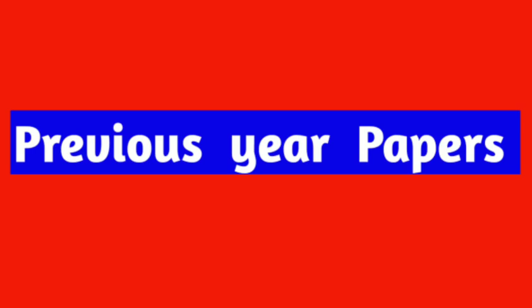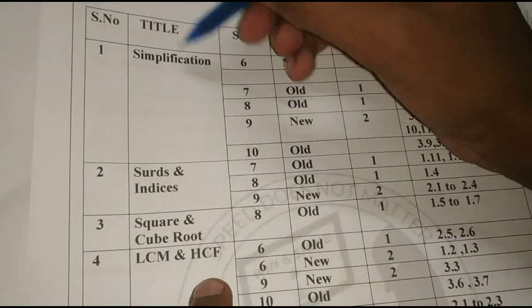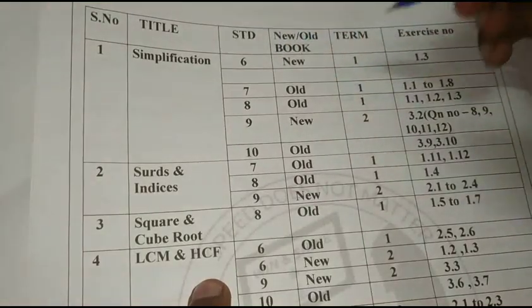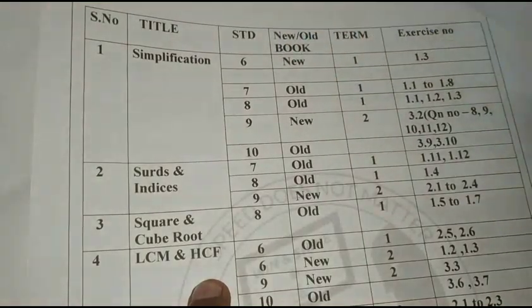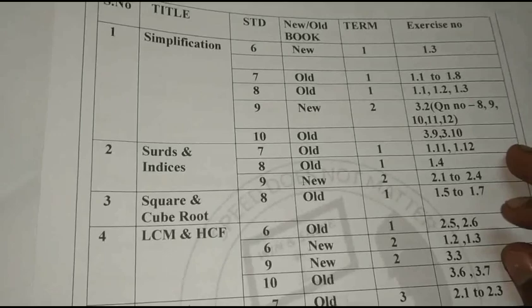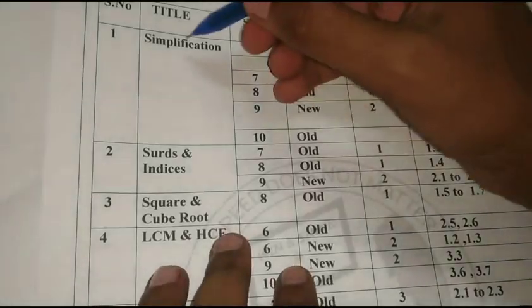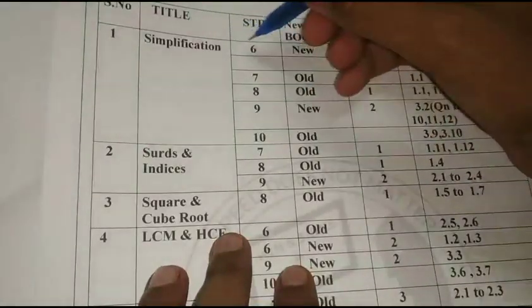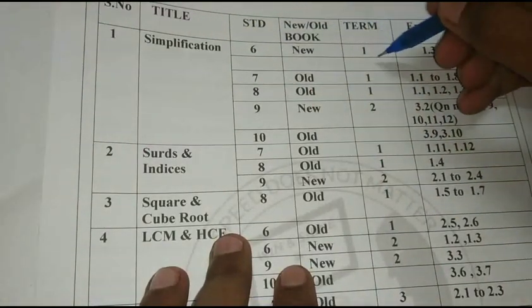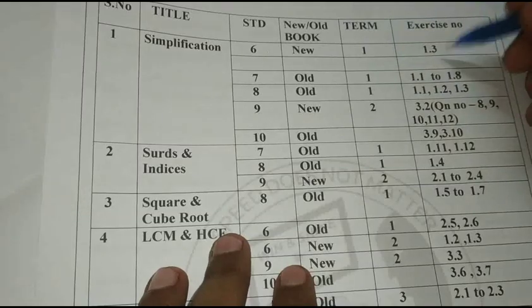Now, what do you do? How do you study from school books? That is the question. We look at the title, standard, old book, new book, and term access. This is the question — Simplification. We can collect this from school books; it's the first term to check, from standards 1 to 3.